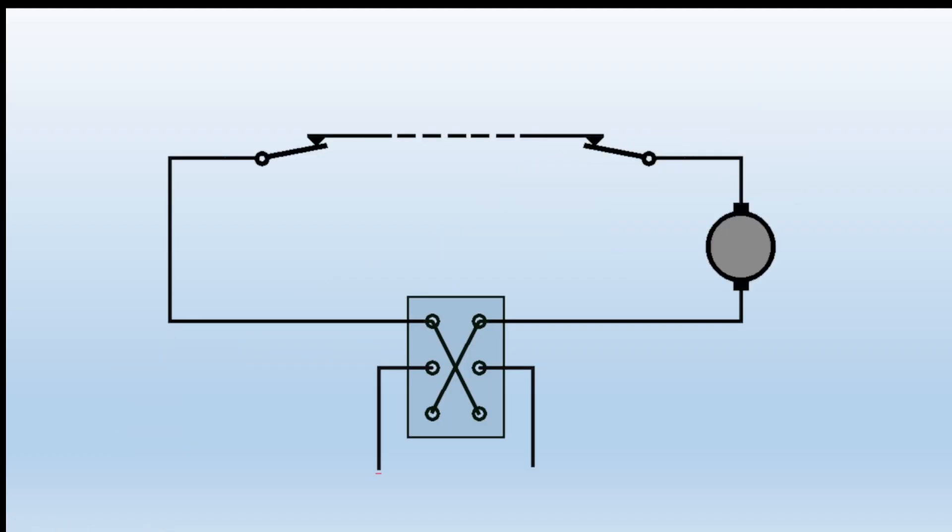So we can wire it this way so we now have a switch, a limit switch at either end of the travel, and depending how far apart they are depends how much travel you get.